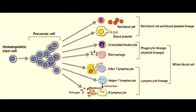What is the mnemonic to help you remember this order? Just remember: 'Neutrophils Like Making Everything Better.' N is for Neutrophil, L is for Lymphocyte, M is for Monocyte, E is for Eosinophil, and B is for Basophil.